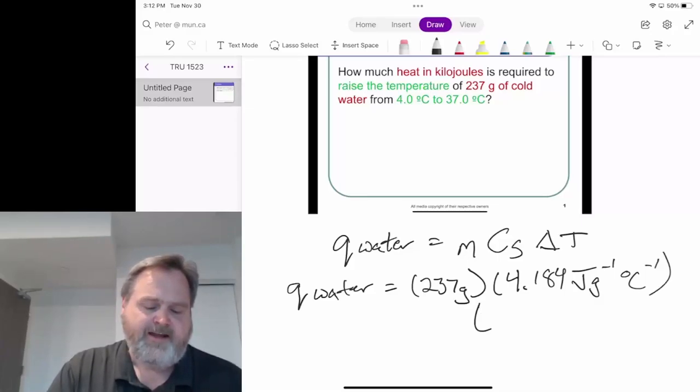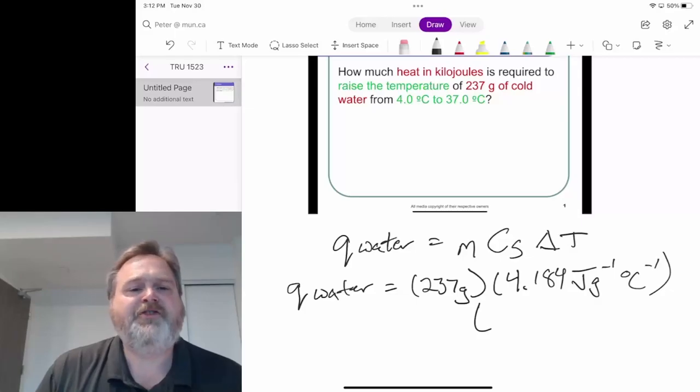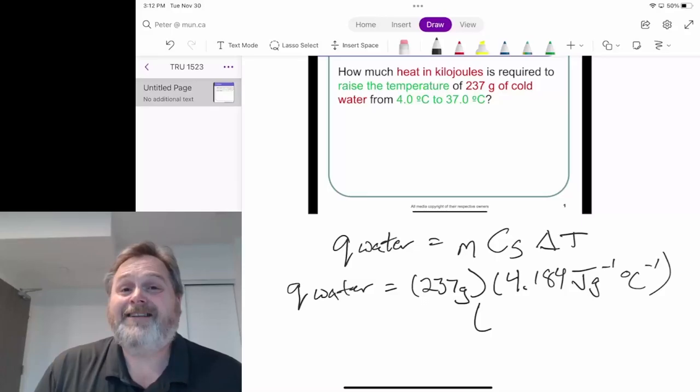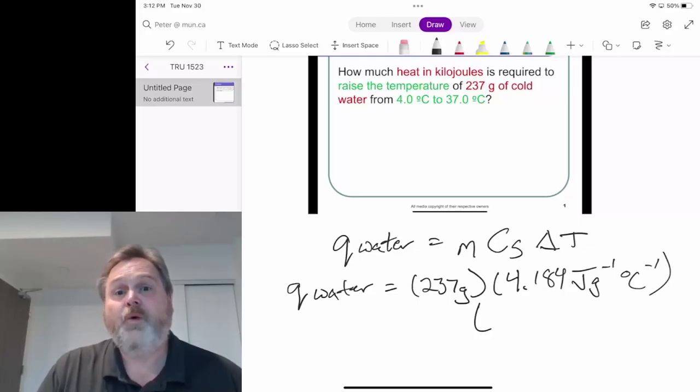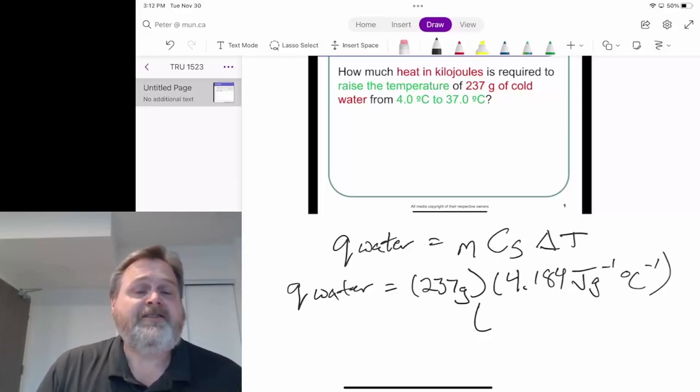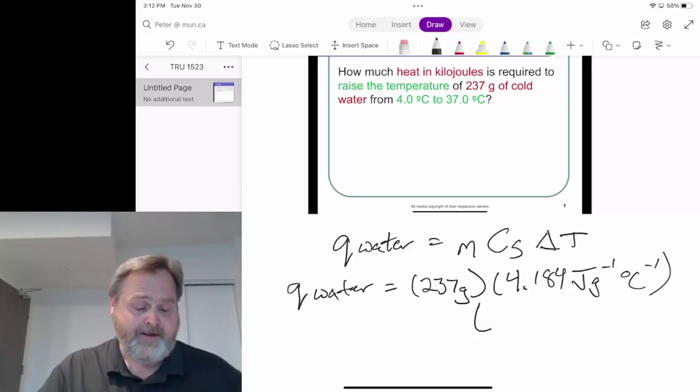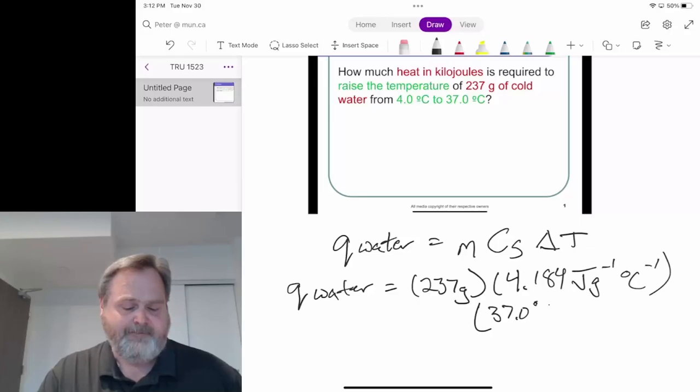And all of this needs to be multiplied by that temperature change, where temperature changes are always the final temperature minus the initial. Whenever we talk about change, it's where we've ended up compared to where we started. We're ending up at 37.0 degrees Celsius, and we're starting from 4.0 degrees Celsius. This is very important for figuring out the sign of the heat. So in this case, that is 37.0 degrees Celsius minus 4.0 degrees Celsius.